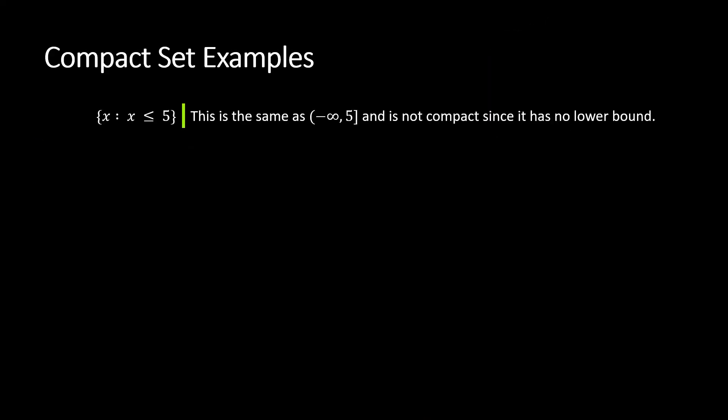If we have the set, this is set builder notation, the set of all x that x is less than or equal to 5. This is just the same as this kind of infinite ray or this interval negative infinity to 5. And it does include the endpoint 5, but this is not compact because it has no lower bound, meaning that there's no number to the left that is bigger than everything in the set because the set goes to negative infinity.